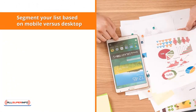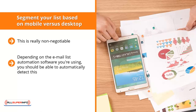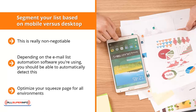Segment your list based on mobile versus desktop — this is really non-negotiable. Over 60% of internet users view the internet through a mobile device, and these devices have different screen sizes. Make sure your mailing list segments members based on their screen preference. Depending on the email list automation software you're using, you should be able to automatically detect this. Regardless, your squeeze page must be mobile ready — it doesn't matter what device visitors use, your page should look its best. Optimize your squeeze page for all environments, whether your audience is viewing through a mobile phone, desktop, or tablet.